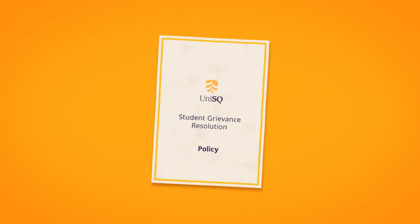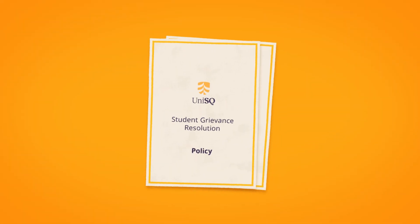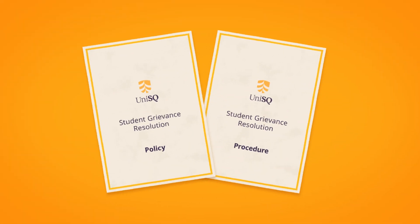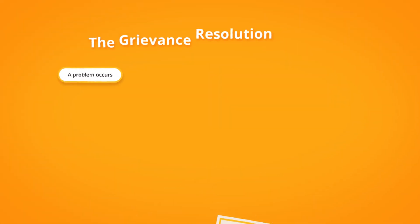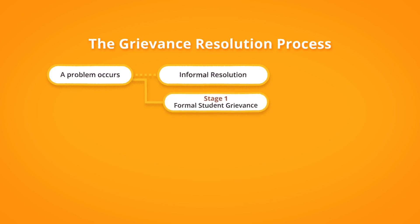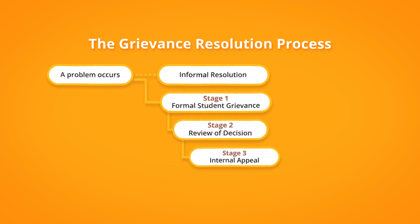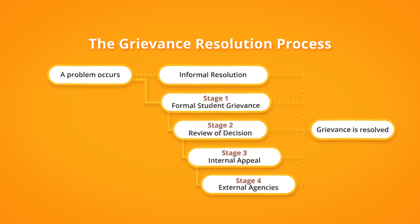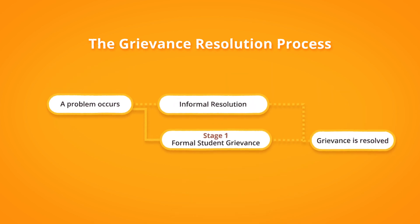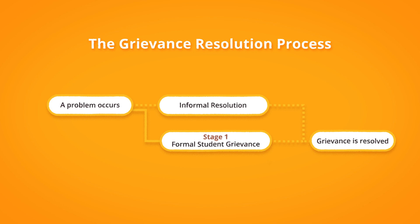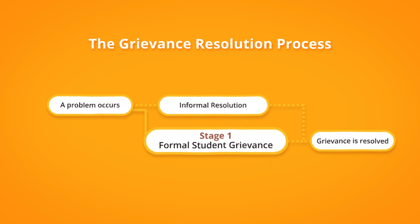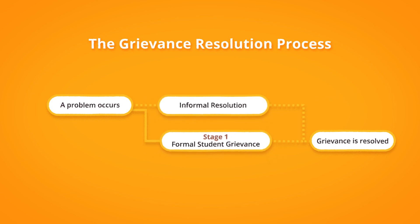The Student Grievance Resolution Policy and Procedure outline five steps in the resolution process. This video will explore the first two steps: Informal Resolution and Stage 1, Formal Student Grievance.